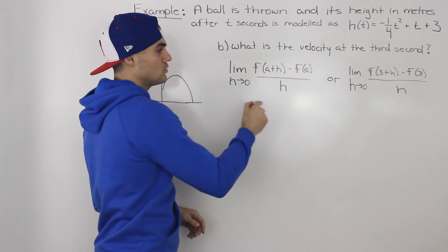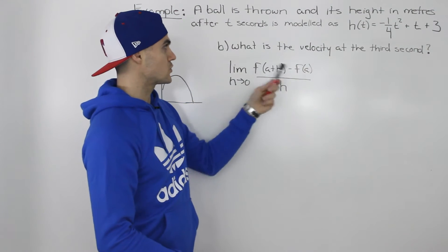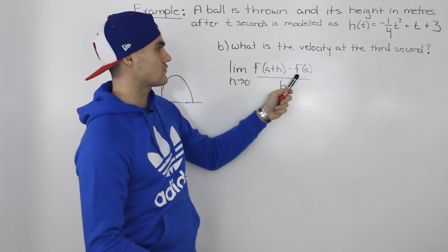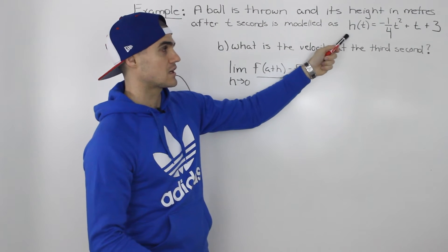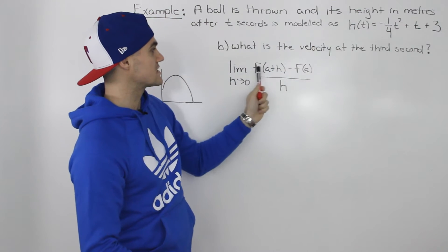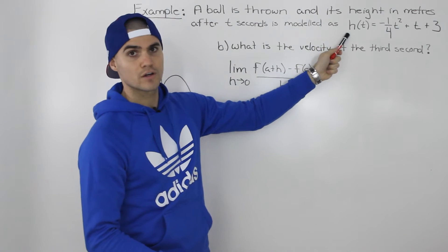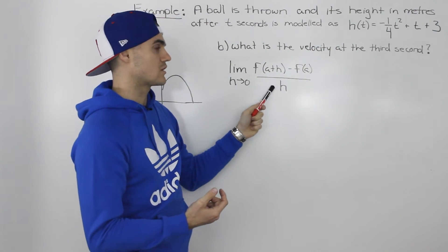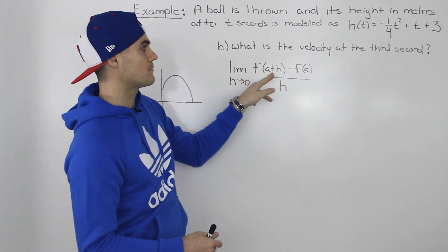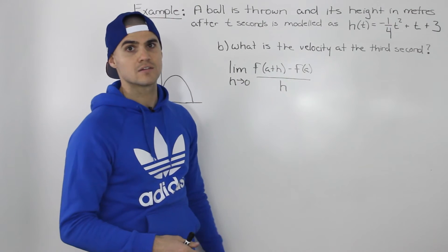Technically this difference quotient should be in terms of h and not f, since the function is height in terms of time. However, I'm keeping it as f to avoid confusion between h as the height function and h as part of the difference quotient — they're two different h's. So I'll keep this as f, but technically it should be h of a plus h and h of a.